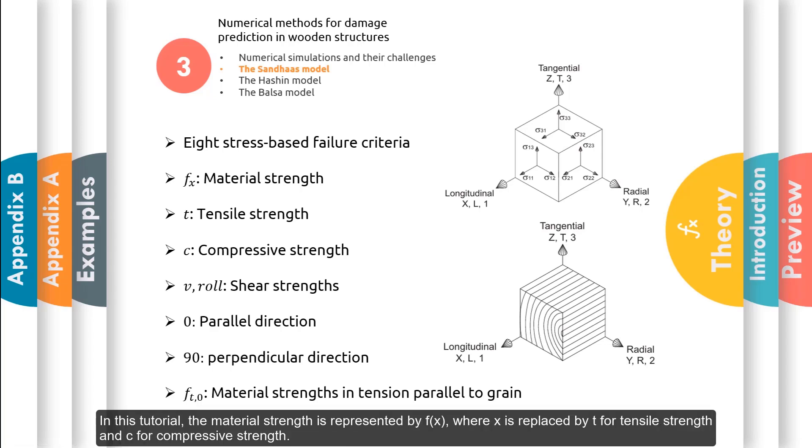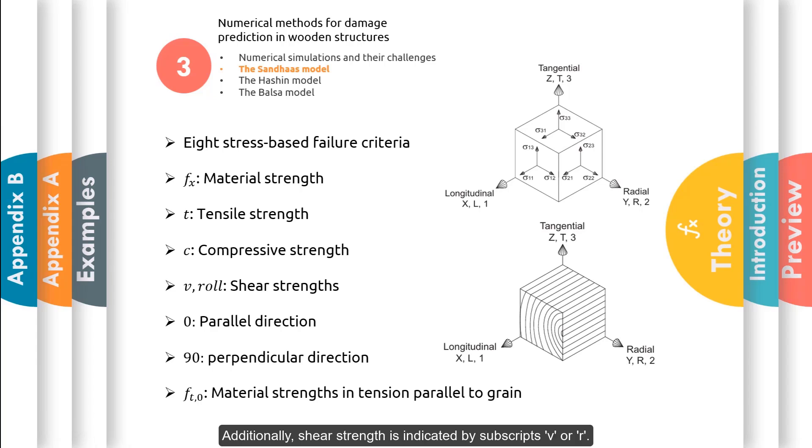In this tutorial, the material strength is represented by F, where X is replaced by T for tensile strength and C for compressive strength.